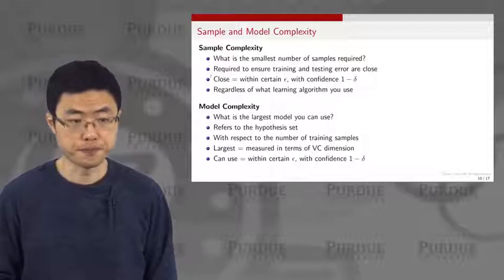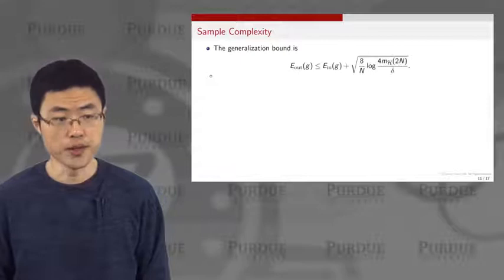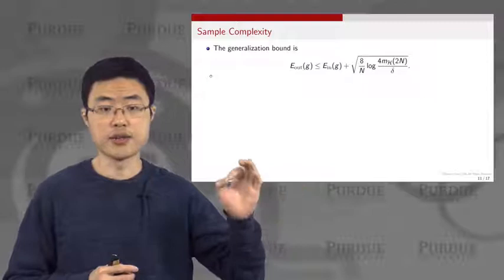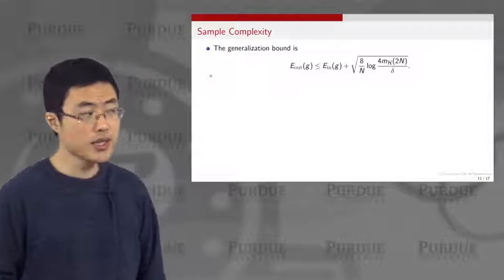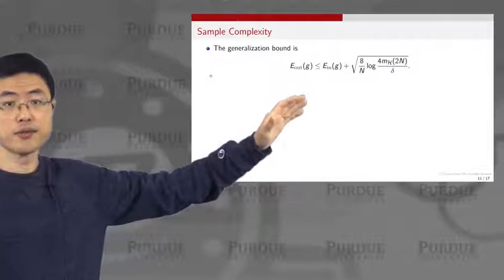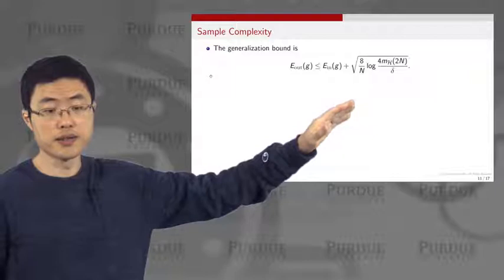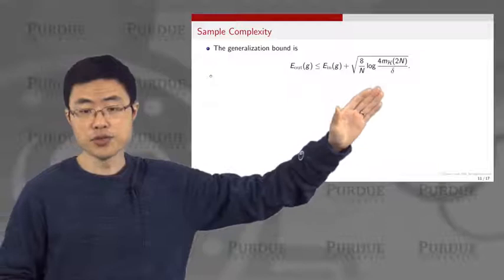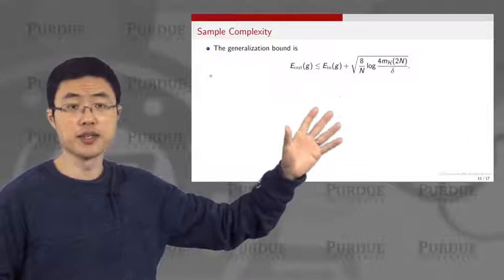Let's look at sample complexity first. The generalization bound discussed before is given by this equation. Looking at the upper bound — it tells you that the testing error cannot be worse than this upper bound, which is the training error plus a correction term. In this term you have n, the number of training samples, and also m_H of 2n, the growth function, which can be further upper-bounded using the Sauer lemma, giving a polynomial in n and the VC dimension.